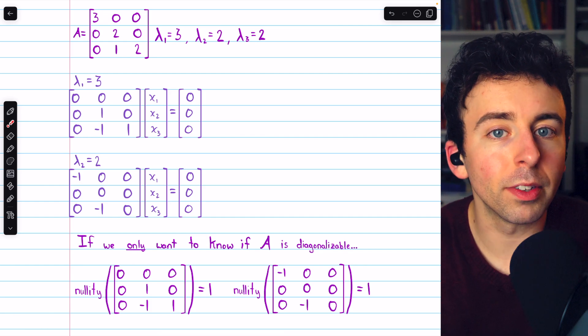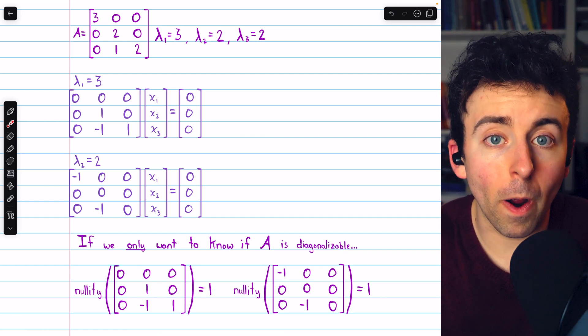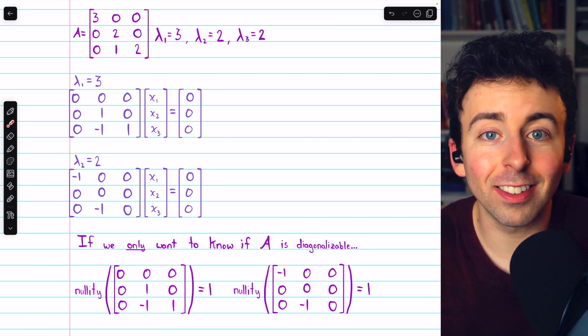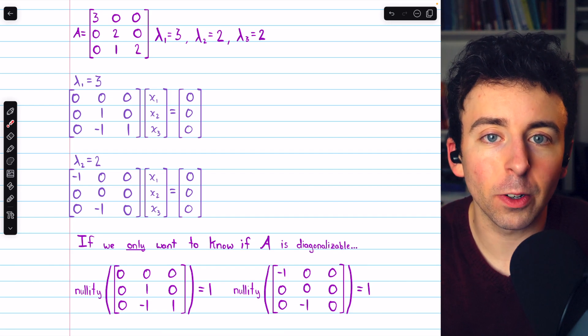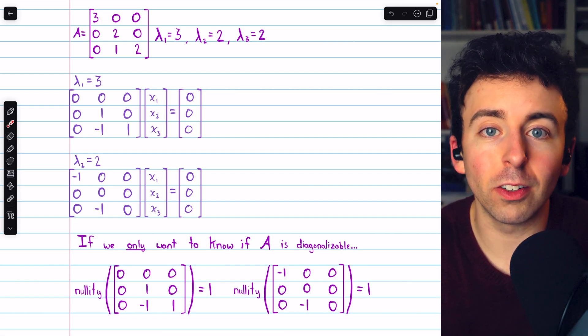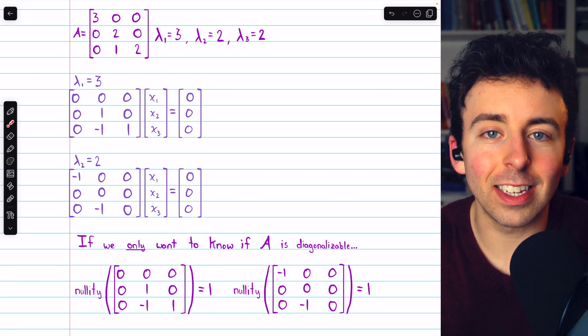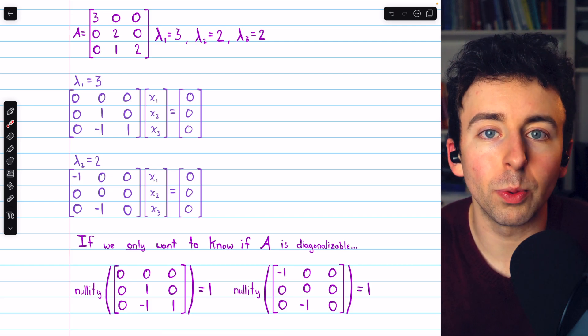But if we didn't know that from the start, then we may be trying to diagonalize it, in which case it would be useful to have the eigenvectors. So another solution would be to just find the eigenvectors and see how many linearly independent ones we have.